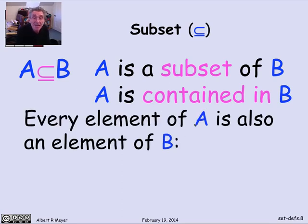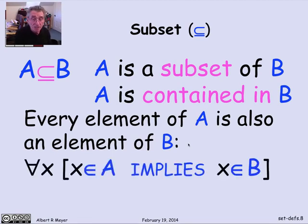It simply means that every element of A is also an element of B. If I wrote that out in predicate logic notation, I'd say for every x, x is in A implies x is in B. If it's in A, then it's in B. Everything in A is in B.